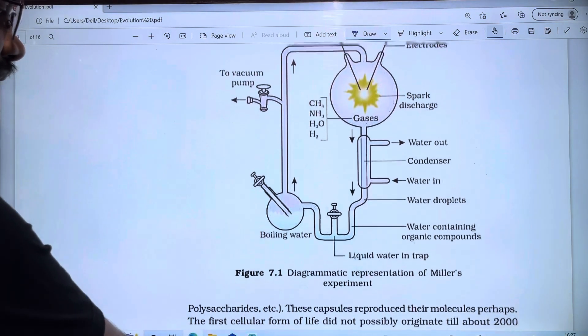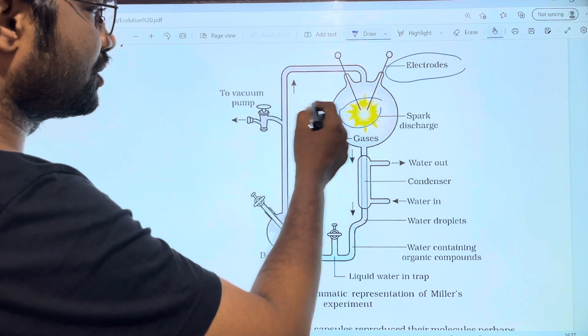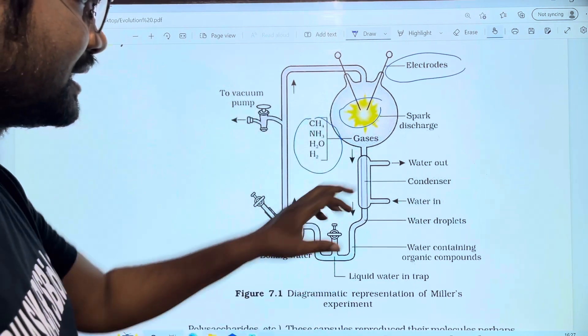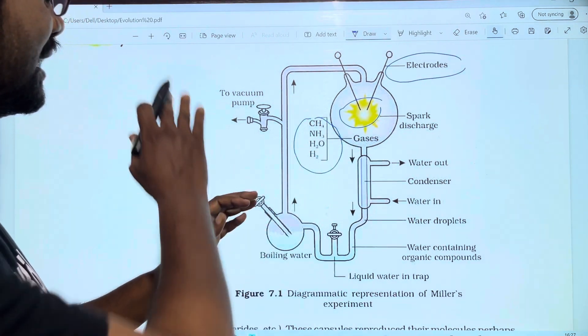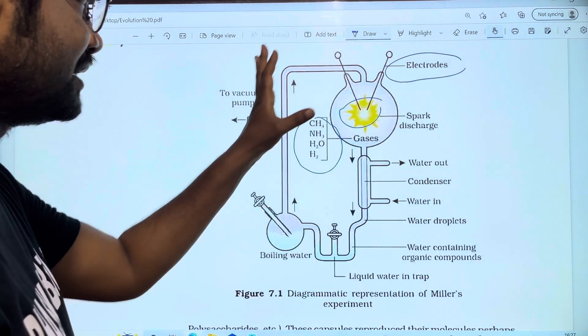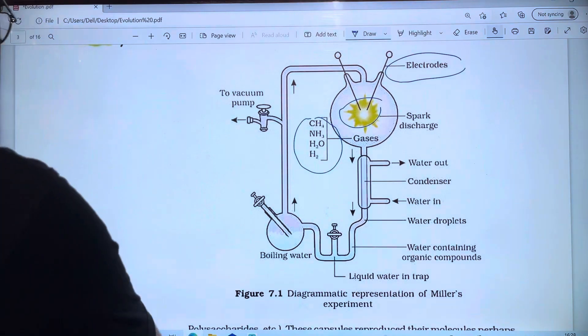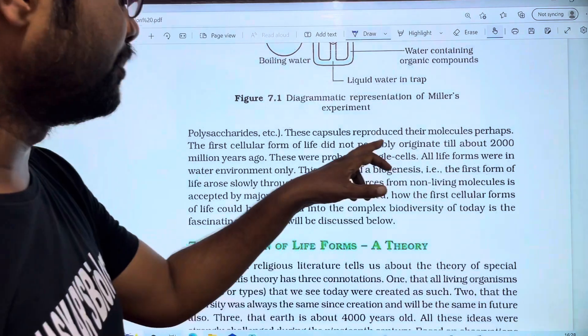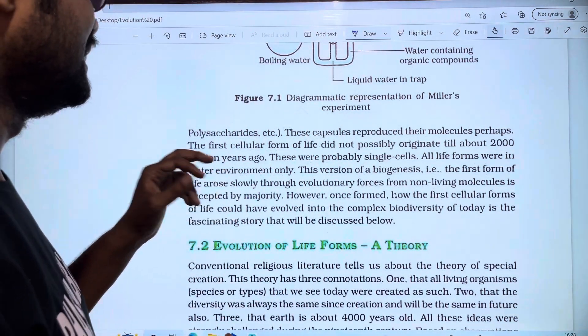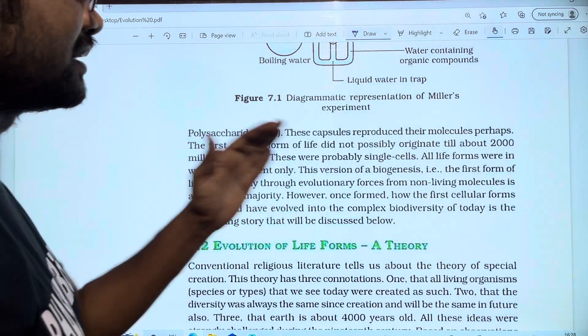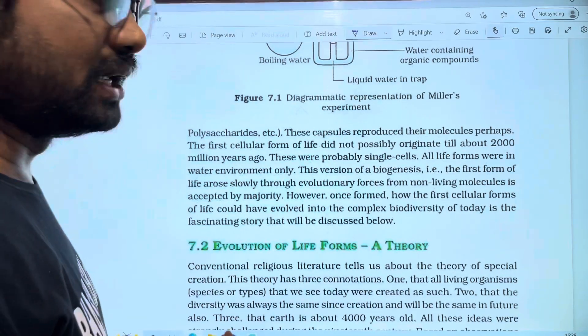These capsules produced their molecules. The first cellular form of life did not possibly originate until about 2000 million years ago. There were probably single cells, the first single cell organisms.